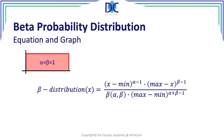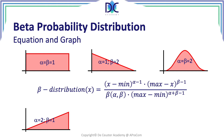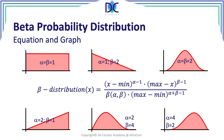When alpha equals beta equals 1, we have a uniform distribution where all random variables have the same probability. Alpha equal to 1 and beta equal to 2 gives a triangular distribution with the mode at the minimum. Alpha equals beta equals 2 gives a normal-like distribution. Alpha equal to 2 and beta equal to 1 gives a triangular distribution with the peak at the maximum. Alpha 2 beta 4 is skewed to the right, and alpha 4 beta 2 is skewed to the left.